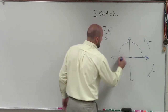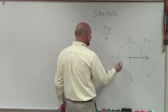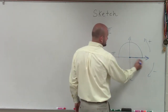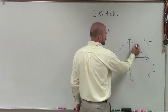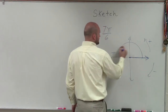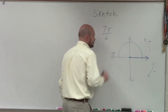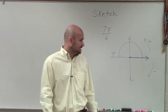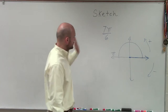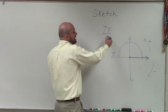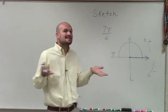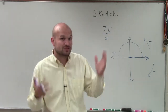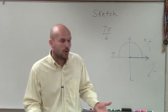We need to understand that halfway around the circle is pi radians, meaning the distance of a radius wrapped around our circle is going to go around there pi times. So halfway around the circle is pi, but you can see that 7 pi over 6 — that's an improper fraction, right?